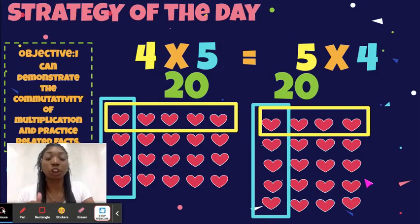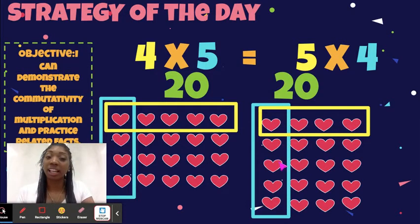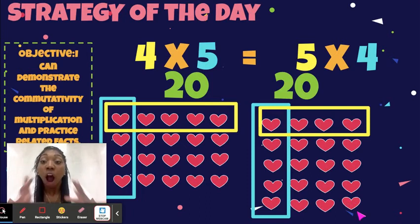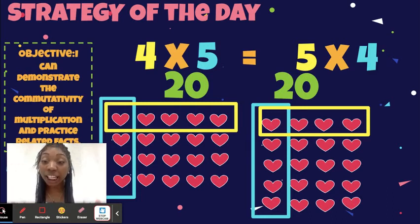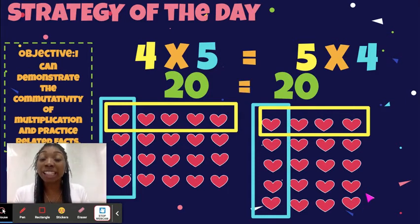Let's just count to make sure — I'm going to skip count by 4: 4, 8, 12, 16, 20. So 4 times 5 is 20 and 5 times 4 is 20. The commutative property tells us that it doesn't matter the order of the factors — the answer is still going to be the same.